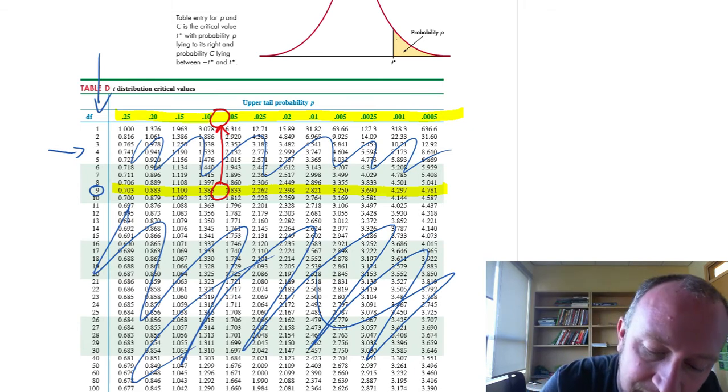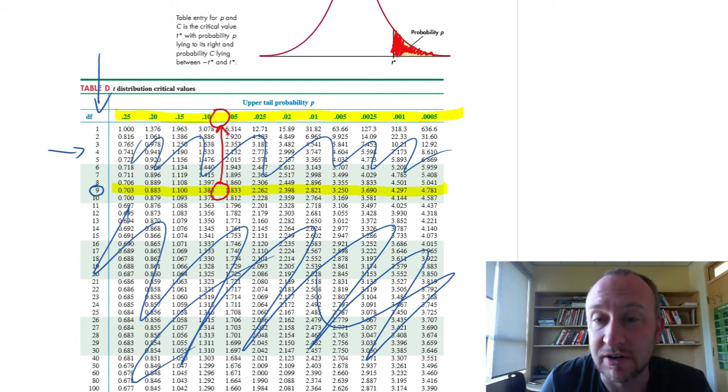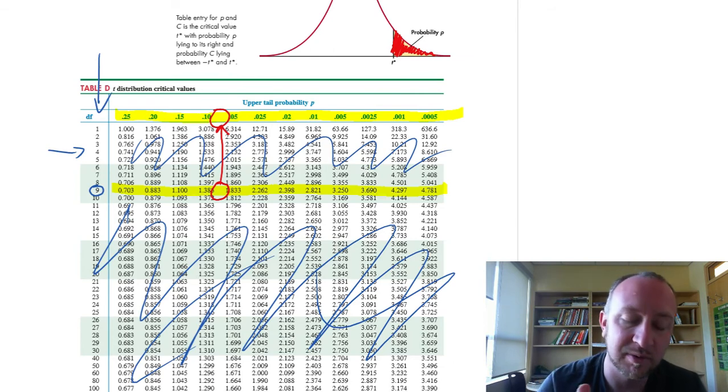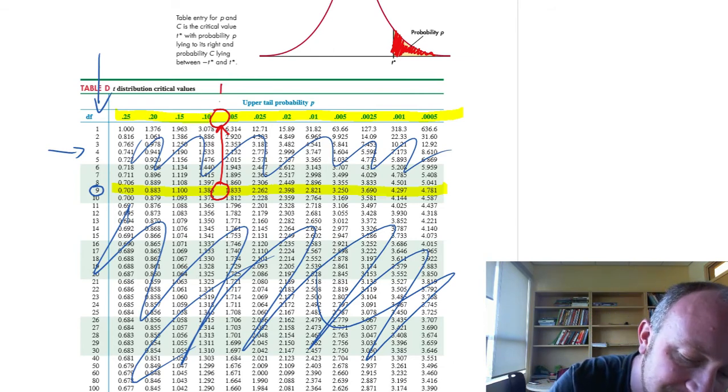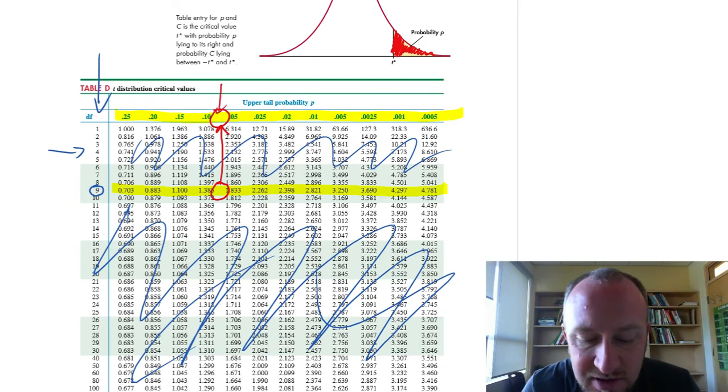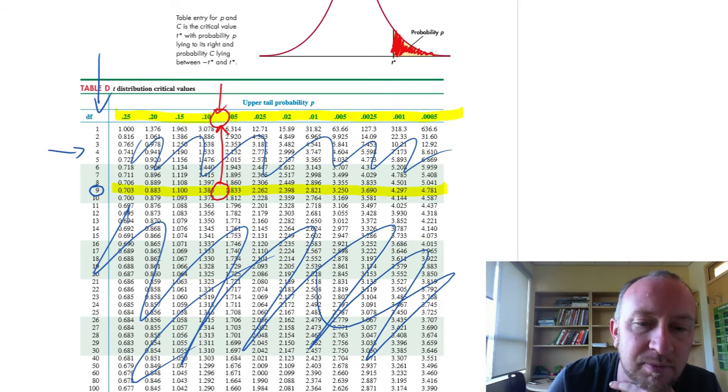Now looking at this table, what information is it giving us? This one, unlike the z-table, this one is giving us an upper tail probability. We're doing an upper tail test, so that happens to be the probability that we want. So our p-value is going to be right in between these, between 0.05 and 0.1.